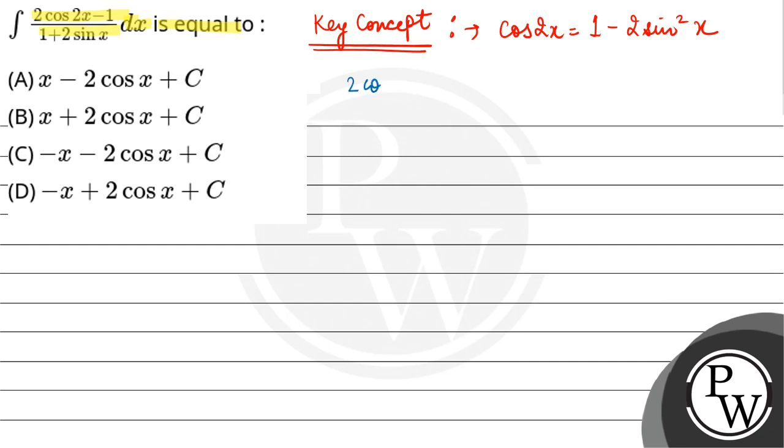So (2cos2x - 1)/(1 + 2sinx) dx is equal to... put the value of cos2x: